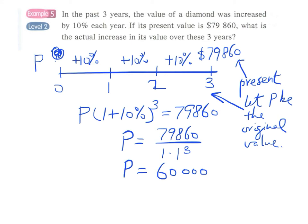So this is our original value. The actual increase in this value over these three years will be the present value minus this original value.